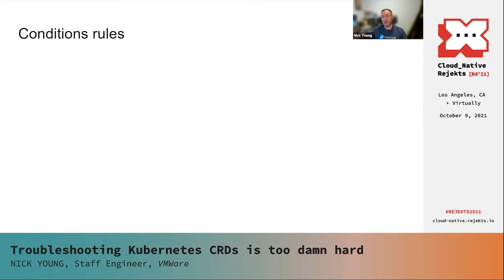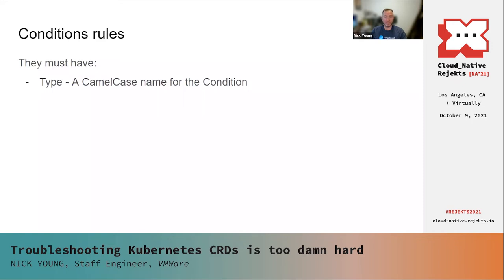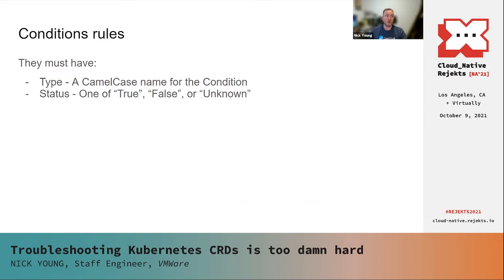So let's talk about the rules of conditions. As part of the upstream spec, conditions have fields they must have. They must have a type, which is a camelCase name for the condition — like MemoryPressure. They must have a status: one of True, False, or Unknown. True and False are obvious. Unknown is really important: it means a controller hasn't been able to determine this value yet. This matters because Kubernetes is an eventually consistent system. When your controller first sees something it may not know what it has to do yet, so it should immediately write the condition as Unknown.